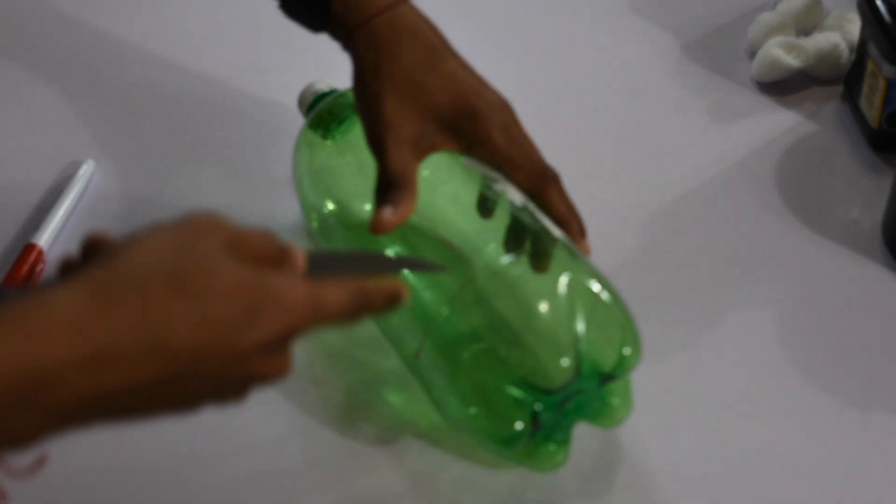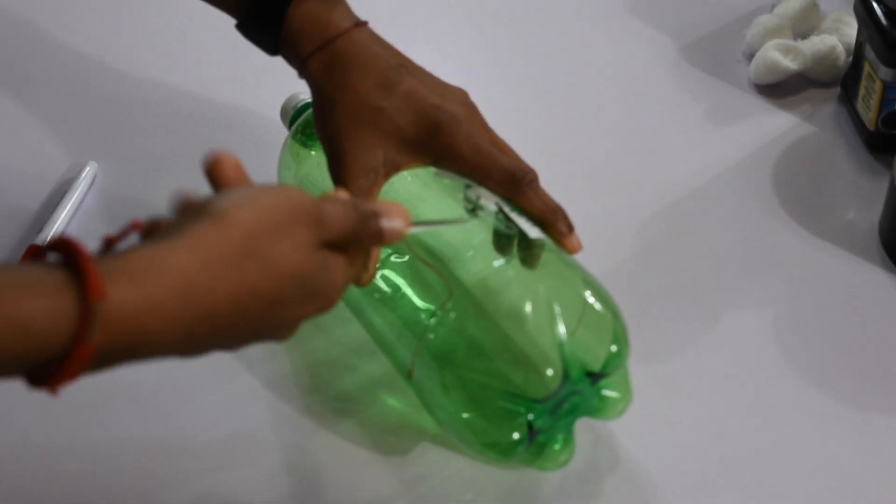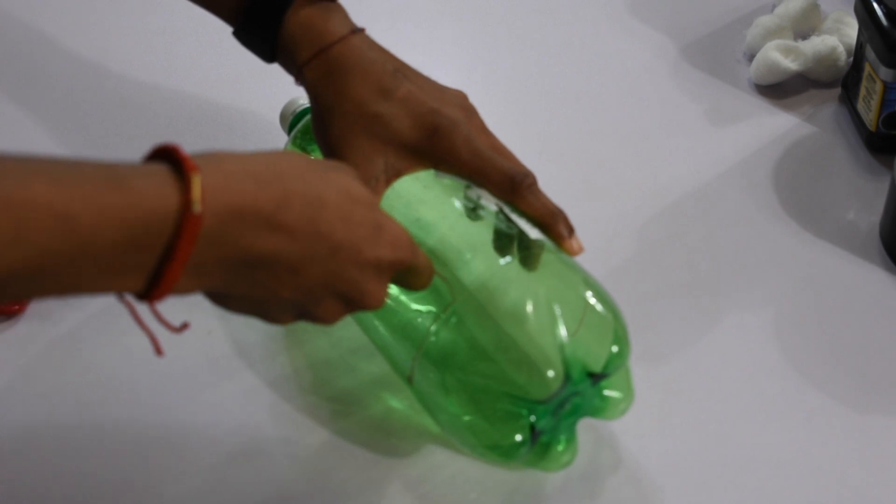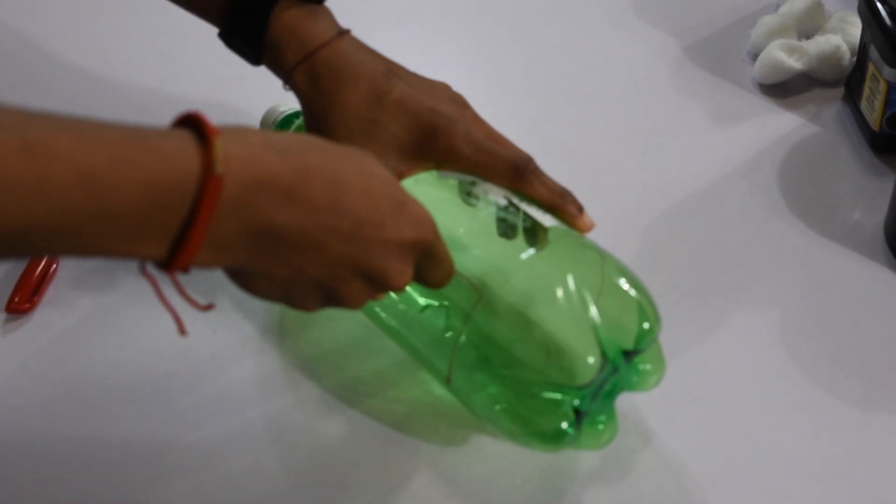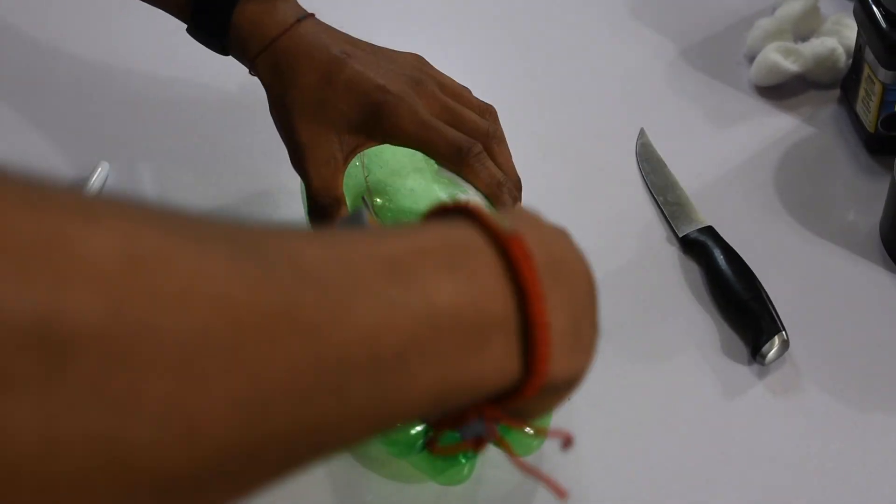Alright, so once that's finished you're going to have something like that. Let's just cut it out. I'm just going to make a hole right here. This is super unsafe guys. Alright cool. And then I'm just going to use the scissors to make outlines.